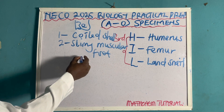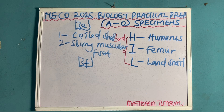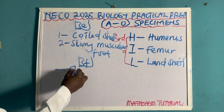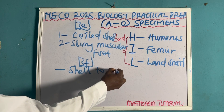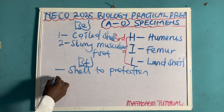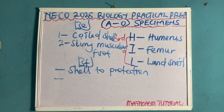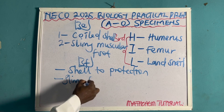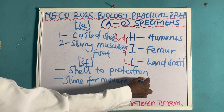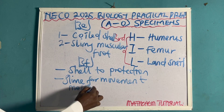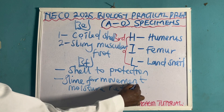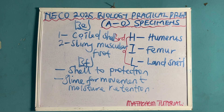Question 3F: they can ask you to state two adaptive features of specimen L, the land snail. Number one, it has a shell for protection. Number two, it has slime for movement and for moisture retention, since it's a land animal.